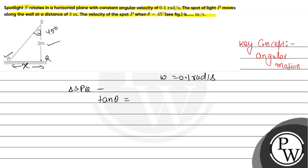Tan theta will be perpendicular divided by base. The perpendicular distance P to Q we will consider as X, and it will be divided by base, that will be 3 meters. So the value of X will be 3 tan theta. Now we will talk about linear velocity.